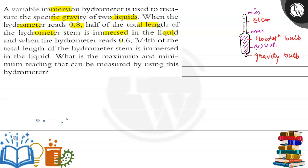When the hydrometer reads 0.6, three-fourth of the total length of the hydrometer stem is immersed in the liquid. What is the maximum and minimum reading that can be measured by using this hydrometer?